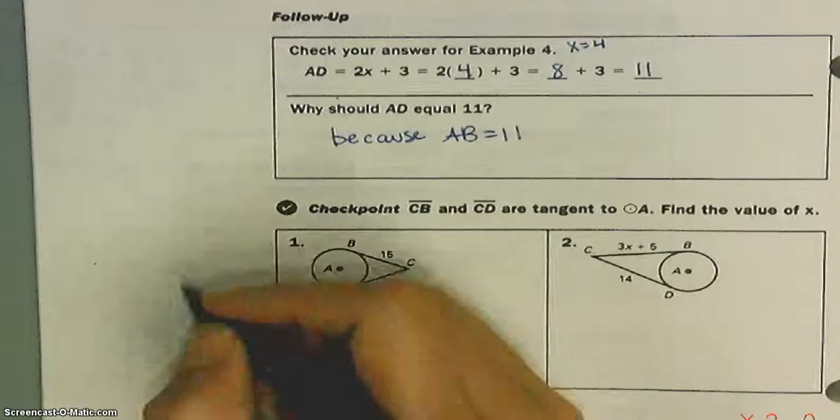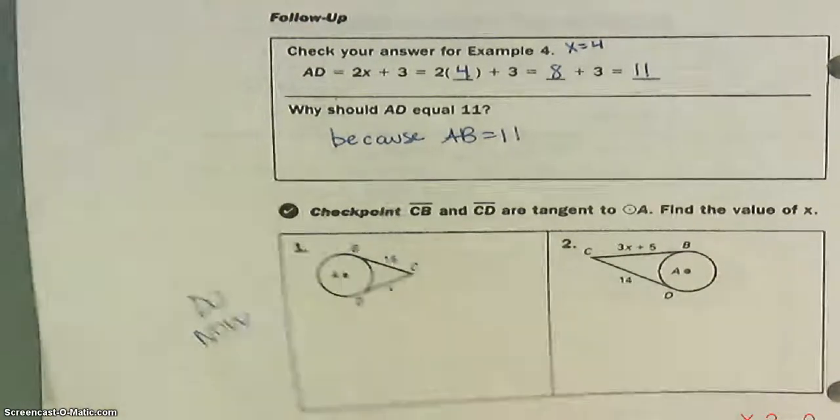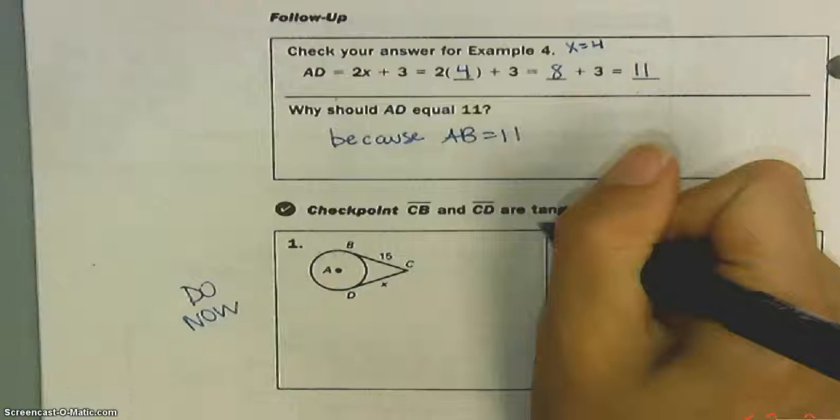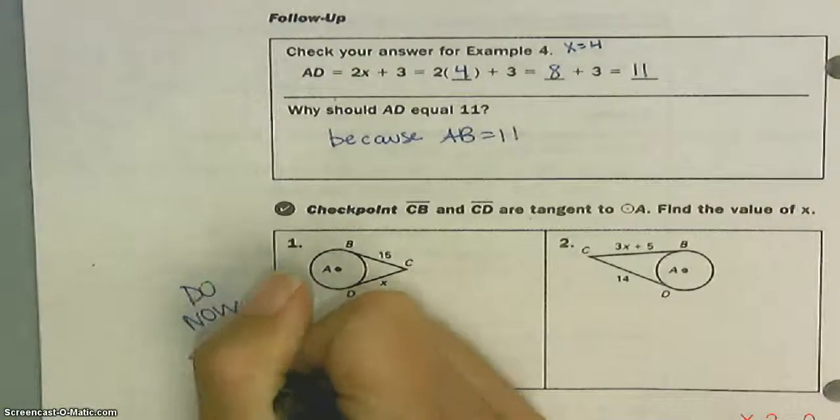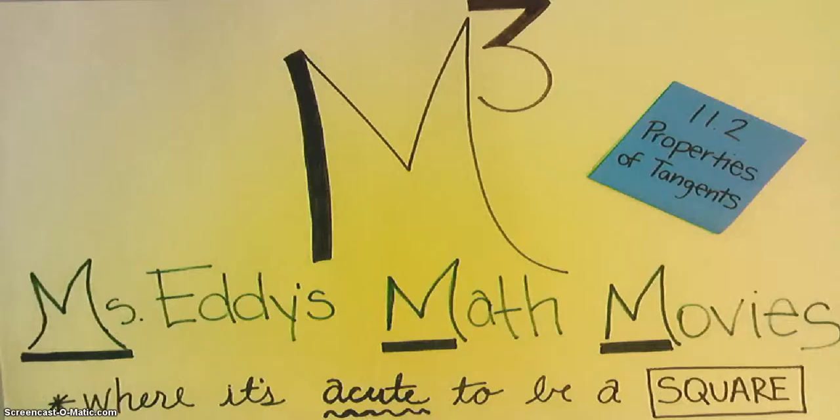You have the checkpoints. You're going to do these now. This is just like example 4. This is M cubed, signing out.